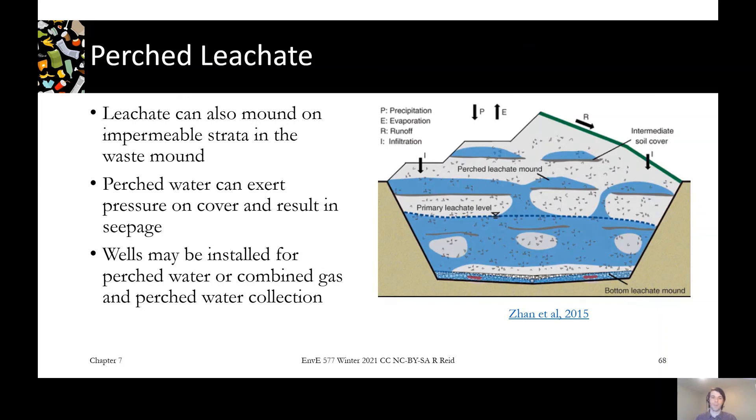Perched water can be controlled operationally by making the waste as homogeneous as possible and avoiding any areas of low conductivity. But when these do develop, you can do things like install wells to actually just pump the water out of the perched leachate mound rather than relying on the leachate collection system way down at the bottom to get it out.